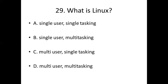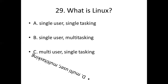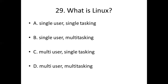Question 29: What is Linux? Option A: single user, single tasking. Option B: single user, multitasking. Option C: multi-user, single tasking. Option D: multi-user, multi-tasking. Answer: Option D, multi-user, multi-tasking.